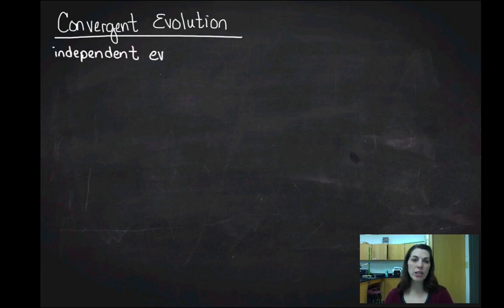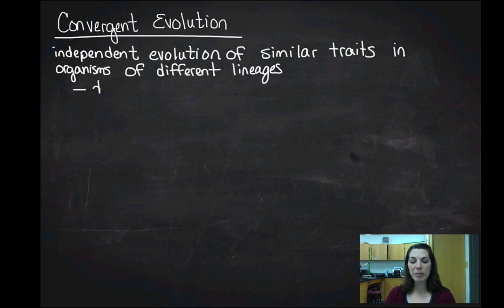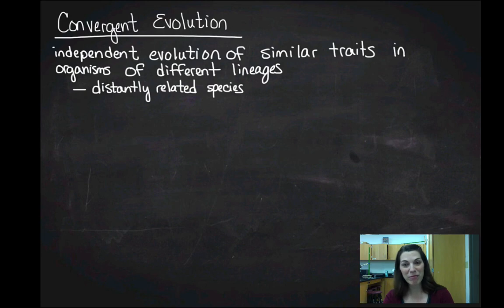Convergent evolution is when you have independent evolution of similar traits in organisms of different lineages. So what does that mean in English? It means that I'm going to get the same adaptation showing up in distantly related species. I would say unrelated species, except all species are ultimately related, so very distantly related species.